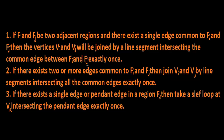Step two: if there exist two or more edges common to fi and fj, then join vi and vj by line segments intersecting all the common edges exactly once. Step three: if there exists a single pendant edge in a region fk, then take a self-loop at vk intersecting the pendant edge exactly once. Following all of this procedure gives us a new graph denoted G*, with new vertices v1, v2, up to vk.